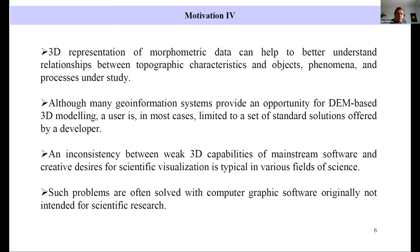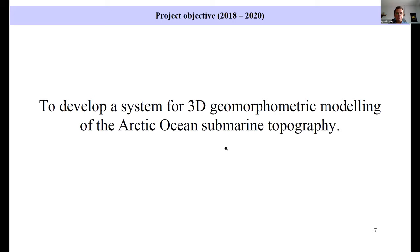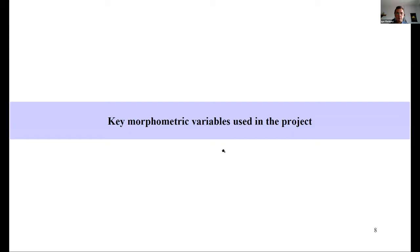So the objective of our project was a three year project, and it finished last year, was to develop a system for 3D geomorphometric modeling of the Arctic Ocean submarine topography using open source computer graphics software. Now I would like to recall definitions and maybe mathematical formulas of key morphometric variables used in this project.